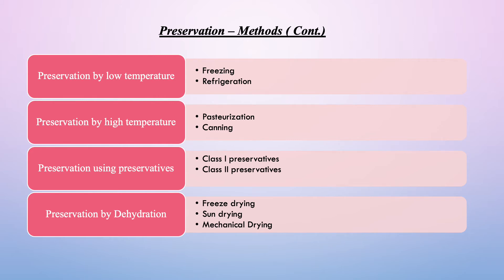The last technique is preservation by dehydration. It includes techniques such as freeze drying, sun drying and mechanical drying. Freeze drying means removal of water from a product while it is frozen by sublimation. Sun drying is limited to climates with a hot sun and dry atmosphere and is used for fruits such as figs, raisins and pears. Mechanical drying involves the passage of heated air with controlled relative humidity over the food to be dried.